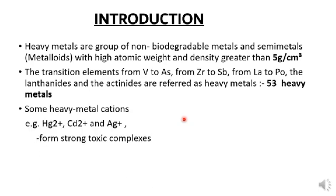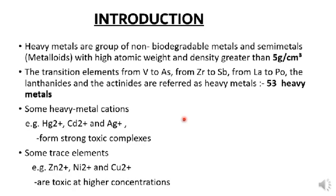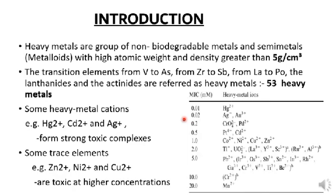Some heavy metals are cations such as mercury, cadmium and silver. They form strong toxic complexes and are too dangerous for any physiological function. Some of them are trace elements such as zinc, nickel and copper, and they are toxic at higher concentration. The table shown here lists some of the heavy metals and their concentration in millimolar at which they inhibit the growth of bacteria.